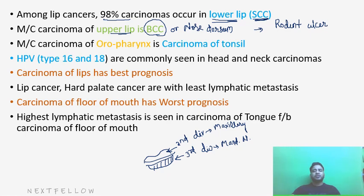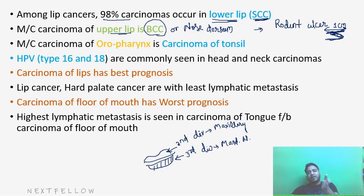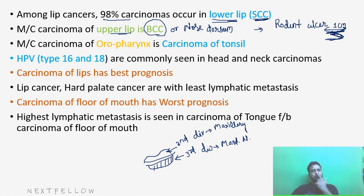Basal cell carcinoma is also known as rodent ulcer. Why rodent ulcer? Because this carcinoma grows like rodents making burrows — the superficial margins may appear normal but it can grow inside. So in surgery of basal cell carcinoma, we take approximately one centimeter margin apart from the lesion because it proceeds in a rodent manner. So upper lip or dorsum of the nose — the most common variety is basal cell carcinoma, whereas the rest of the head and neck is squamous cell carcinoma.